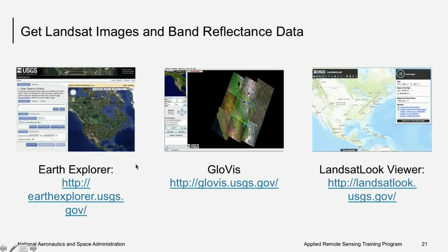You can zoom into your region of interest and get data in the form of tiles. You can visually inspect images through these tools or download band-by-band reflectances to your computer for further processing in digital form.